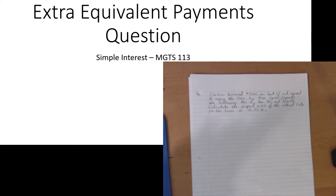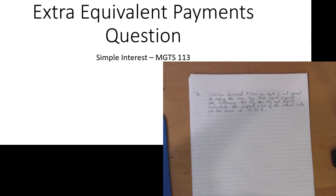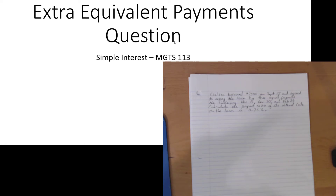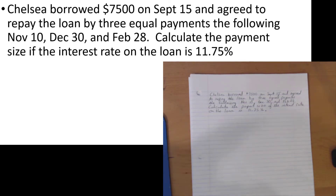Cash or money received at one moment in time is worth more or less to us than even the same amount of cash received at a different moment in time. So this kind of question looms large when we get to the final exam. When we get into compound interest, we start dealing with equivalent payments in that particular topic area. So let's look at an example here.